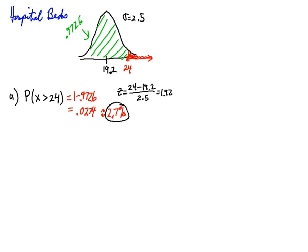So the probability that the capacity will be exceeded — that there won't be beds for people — is about 2.7%. This is the area under the density function above the interval. Because the table always reads to the left, I needed to subtract the table value from 1 to get the answer.